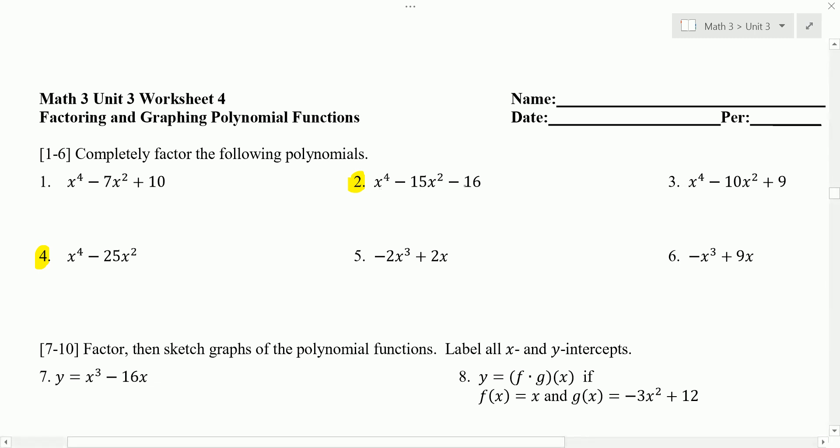Well, here we have three terms, x to the 4th minus 15x squared minus 16. And although it's not quadratic, we can factor it as if it were a quadratic trinomial because the power or the degree of the first term is twice the degree of the second term. And if it follows that pattern, you can use this process.